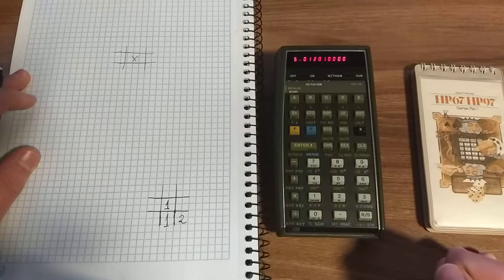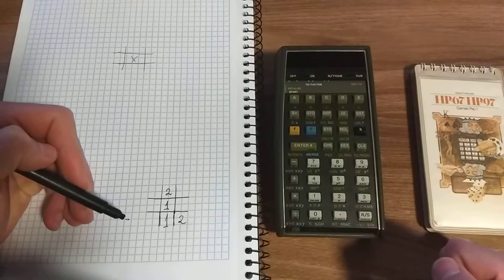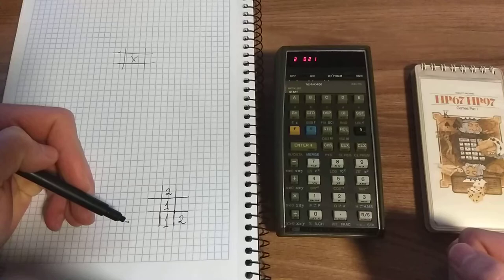The calculator is defining its next move and selected position nine. If I want to block the calculator from winning again, I go here, which corresponds to the first position. So I hit one, run, and stop.